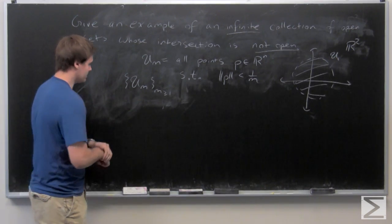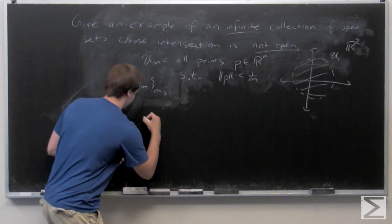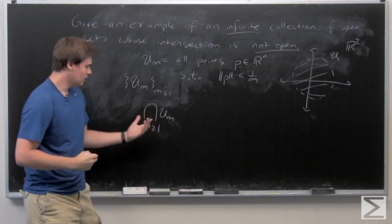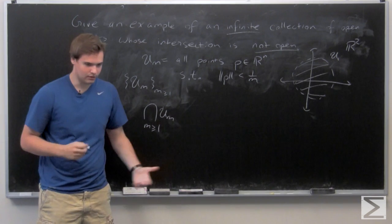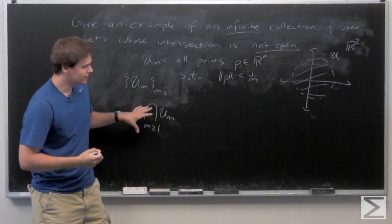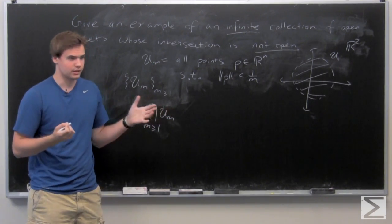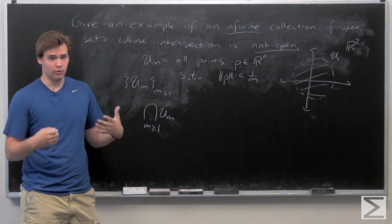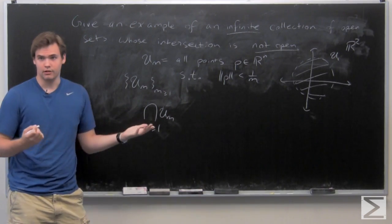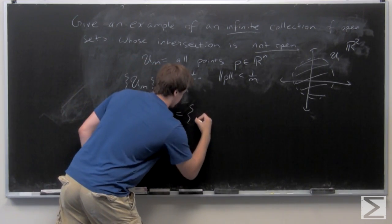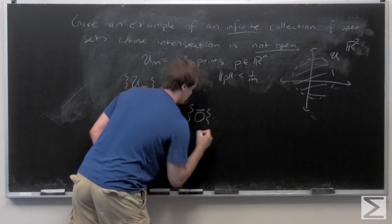Okay, we have this, we want to take this intersection now. Well, after a bit of work, very easy to show, you can see that the only element that's inside this intersection is the origin, because it's less than 1 over m for every m. And it's the only point whose norm is such. So you can see that this intersection is only the origin.